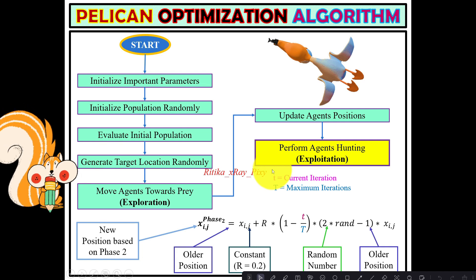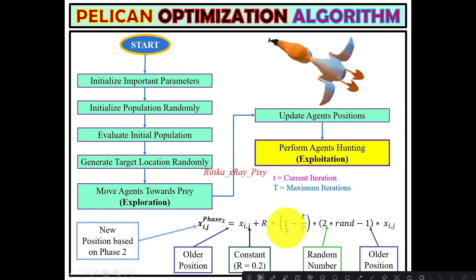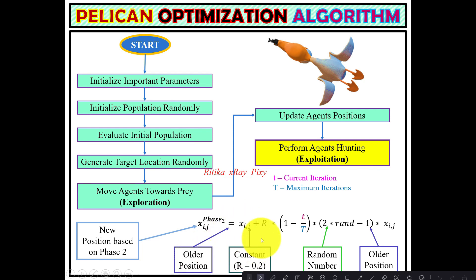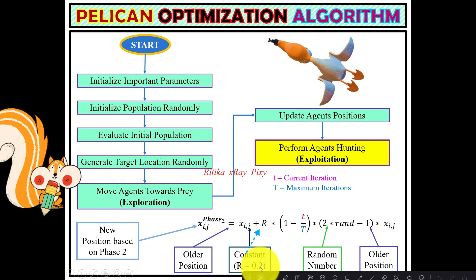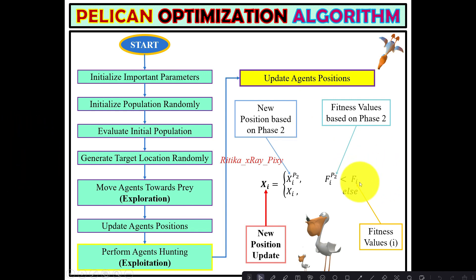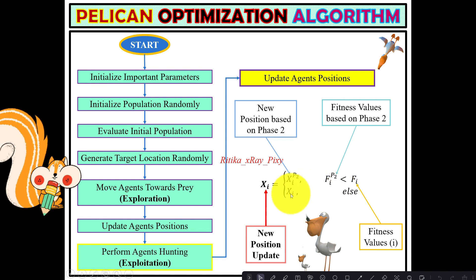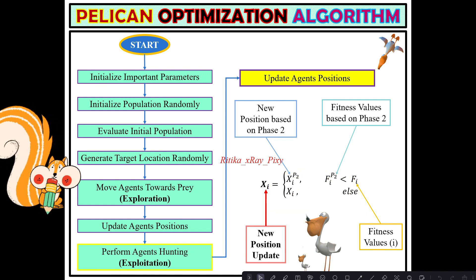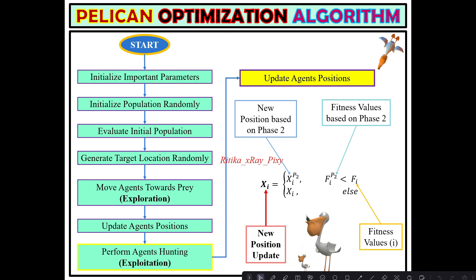In the exploitation phase, the new position for the pelican is calculated based on the current iteration t, maximum iteration T, the older position, and a constant r with value 0.2. The final position is updated only if the new fitness value is better than the older one — if the new fitness is better, the new position is accepted; otherwise, the older position is kept. This prevents pelicans from moving into non-optimal areas.